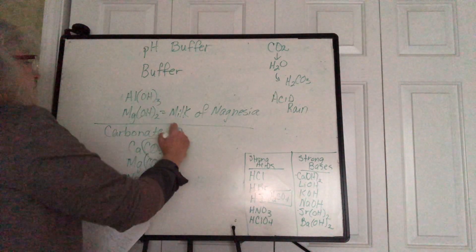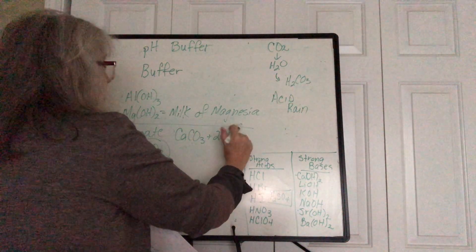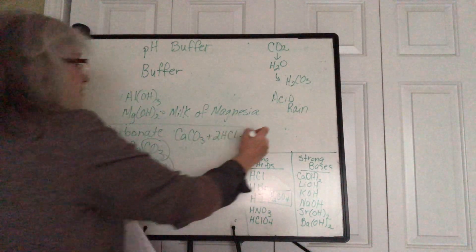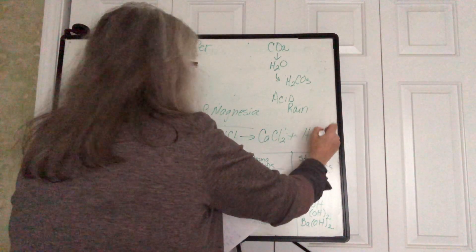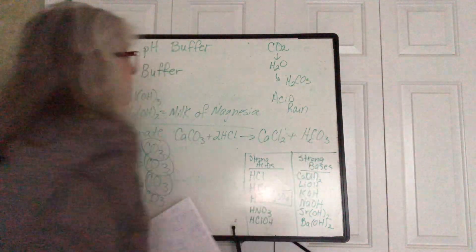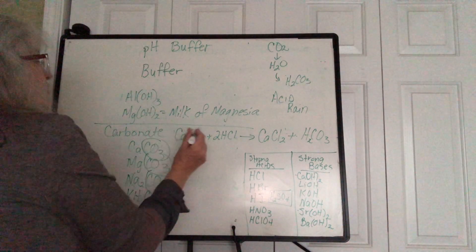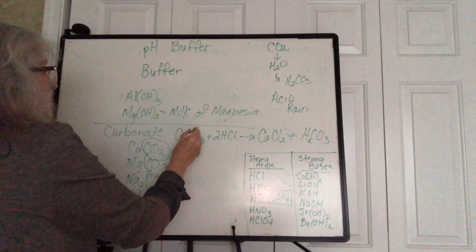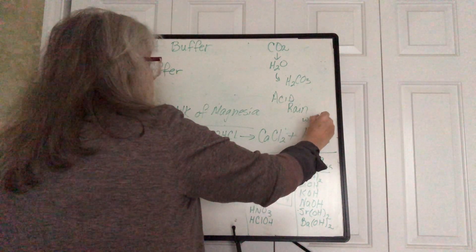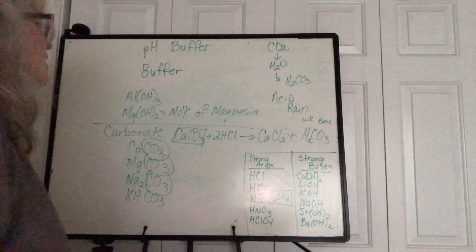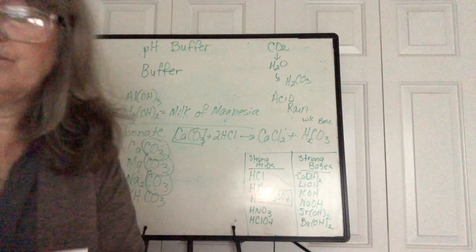If we take calcium carbonate and add our stomach acid — hydrochloric acid — we're going to get calcium chloride as a salt and hydrogen carbonate or carbonate. So we have a salt and a weak base, which meets the definition of a buffer. A buffer is a weak acid and its salt in the system, or a weak base and its salt in the system.